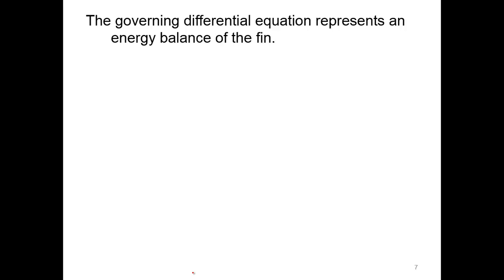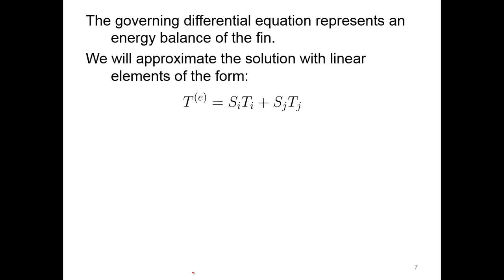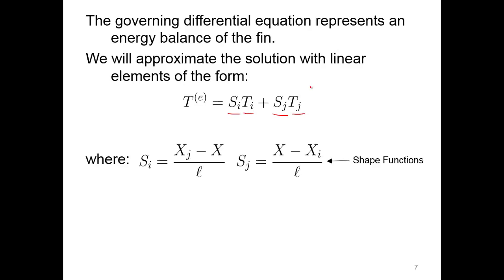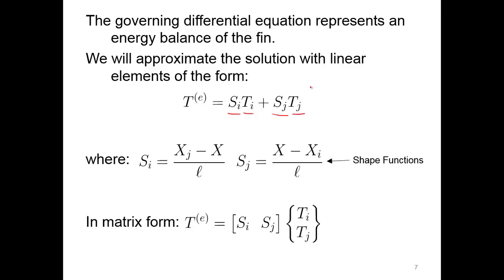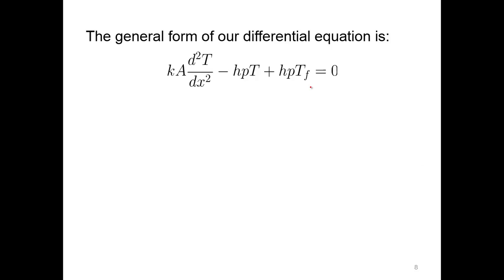The governing differential equation represents an energy balance of the fin. We will approximate the solution with linear elements using our linear shape function — shape function at node i and shape function at node j multiplied by the temperatures at those corresponding nodes — expressed in global coordinates as well as in matrix form. The general form of our differential equation can also be represented in a more compact form.